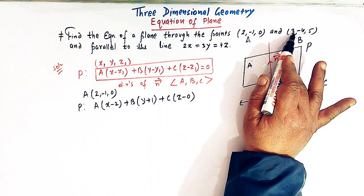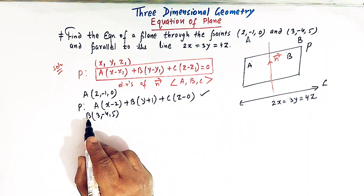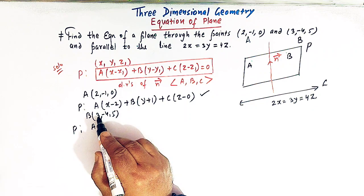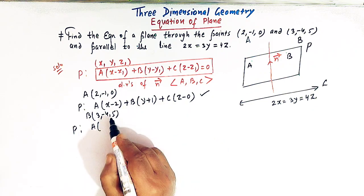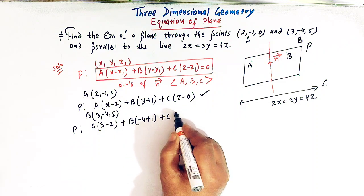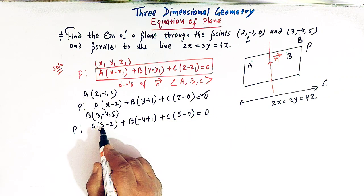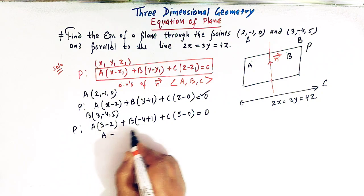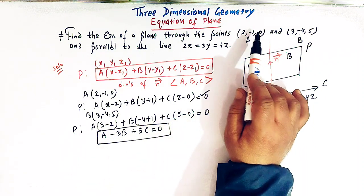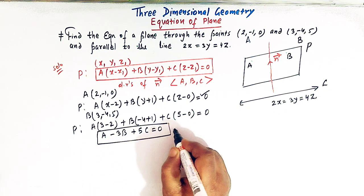This plane also passes through point B, so the equation must be satisfied by point B as well. Substituting x = 3, y = -4, z = 5, we get A(3 - 2) + B(-4 + 1) + C(5 - 0) = 0, which simplifies to A - 3B + 5C = 0. This gives us our first equation in A, B, and C.